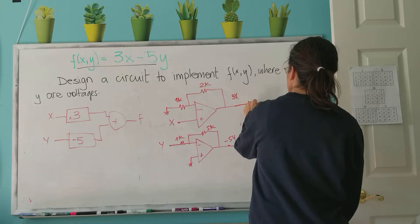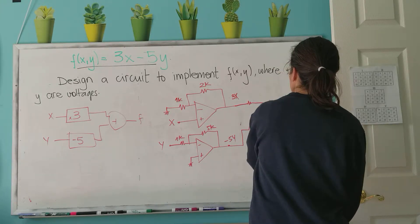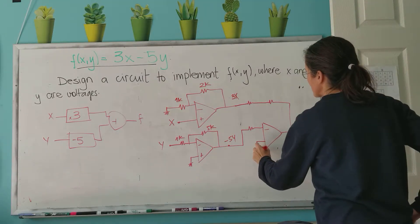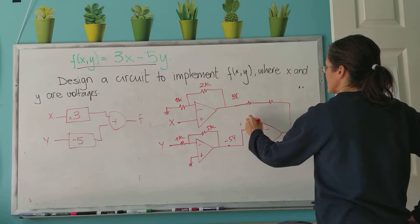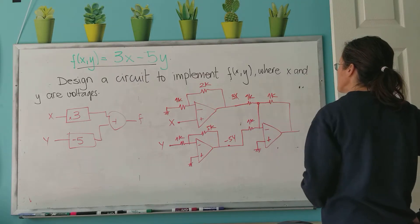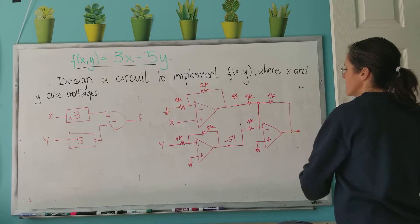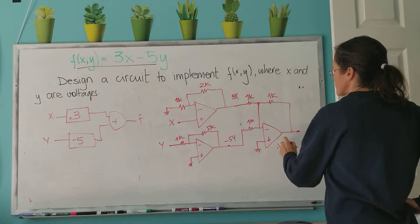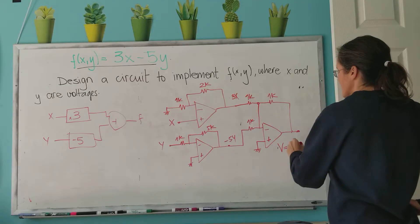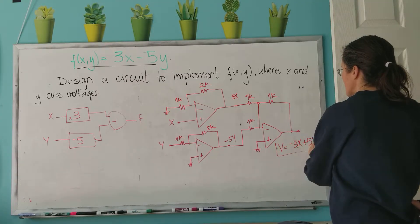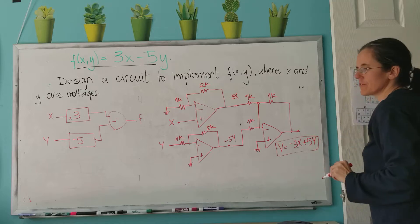The problem is that when I use a summing amplifier, which is my third block - so 1k, 1k, 1k, 1k, 1k - here I have the voltage is -3x + 5y, because a summing amplifier is actually an inverting amplifier, so the signals have to come into the negative input.